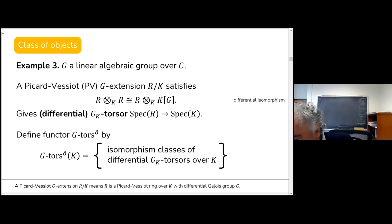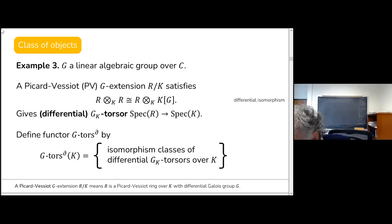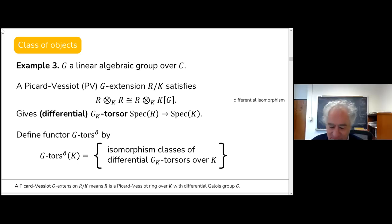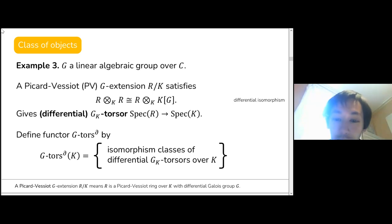In response to a clarifying question: yes, we mean Picard-Vessiot extensions up to isomorphism over K, specifically up to differential isomorphisms — isomorphisms that respect the derivation.